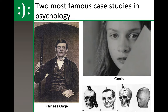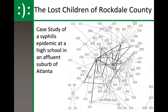Genie, also known as the feral child or the wild child, was locked up in her room for 14 years of her life in Los Angeles. We'll see a video clip about the discovery of Genie and why she's considered a feral child. The Lost Children of Rockdale County is a more recent case study. Phineas Gage was in the late 1800s, Genie was in the 1970s, and this was in the 1990s. It is a case study of a syphilis epidemic at a high school in an affluent suburb of Atlanta, much like many suburbs here in Indianapolis — extremely rare to have that many syphilis cases in such a school.